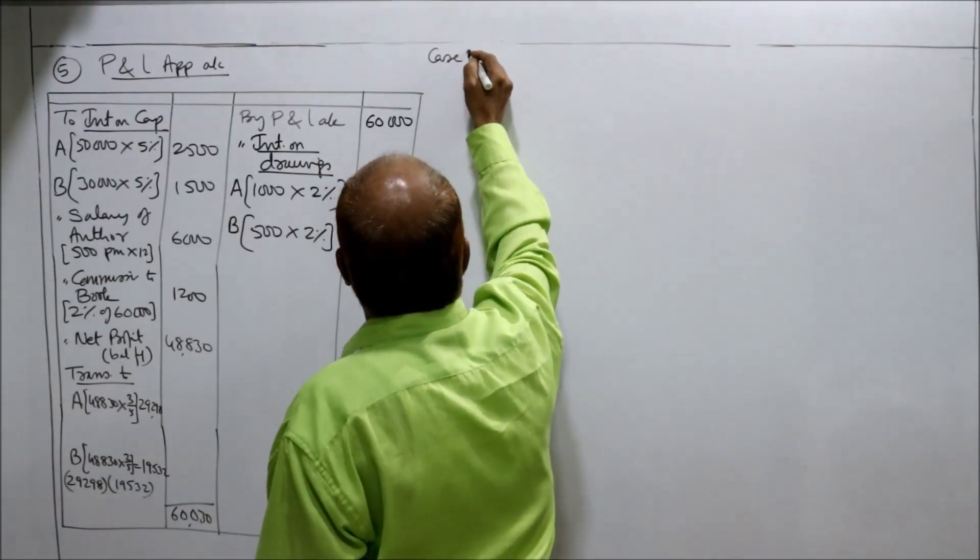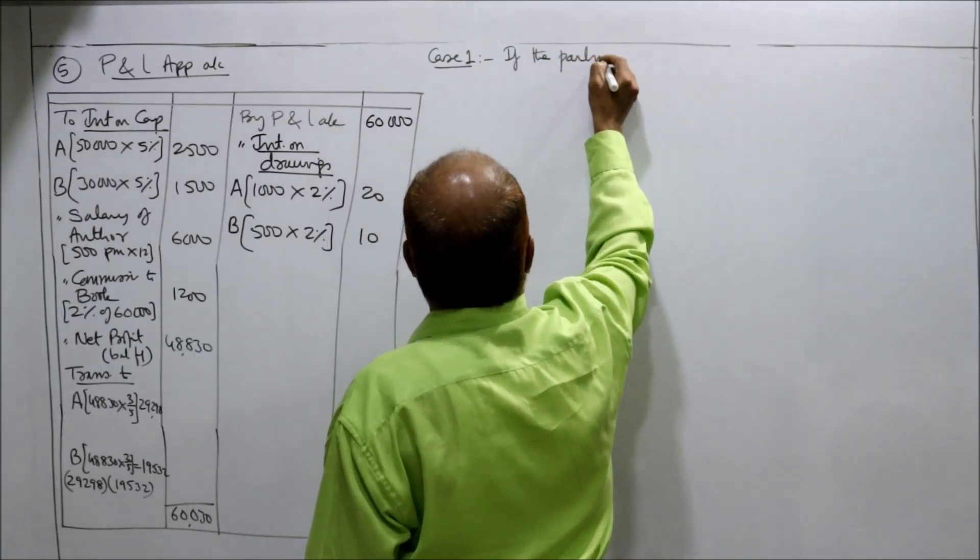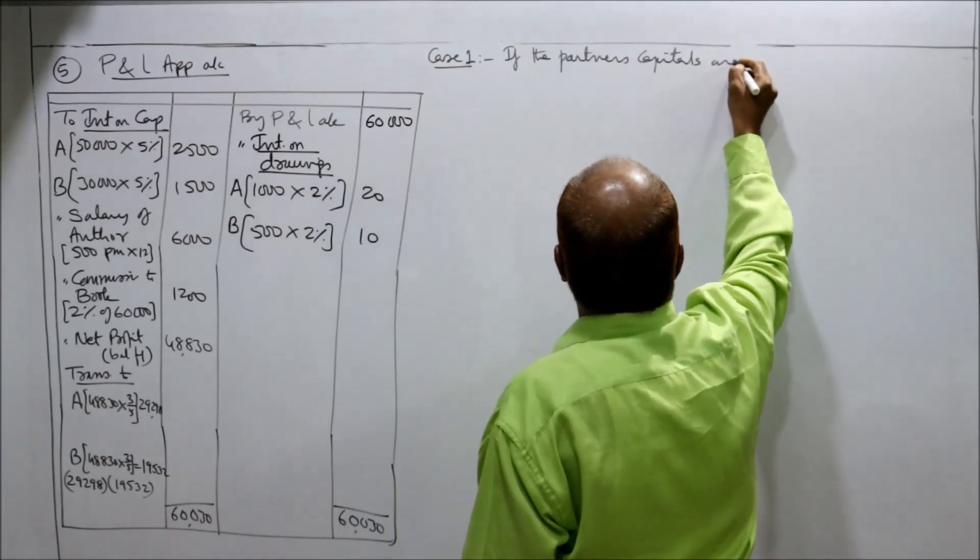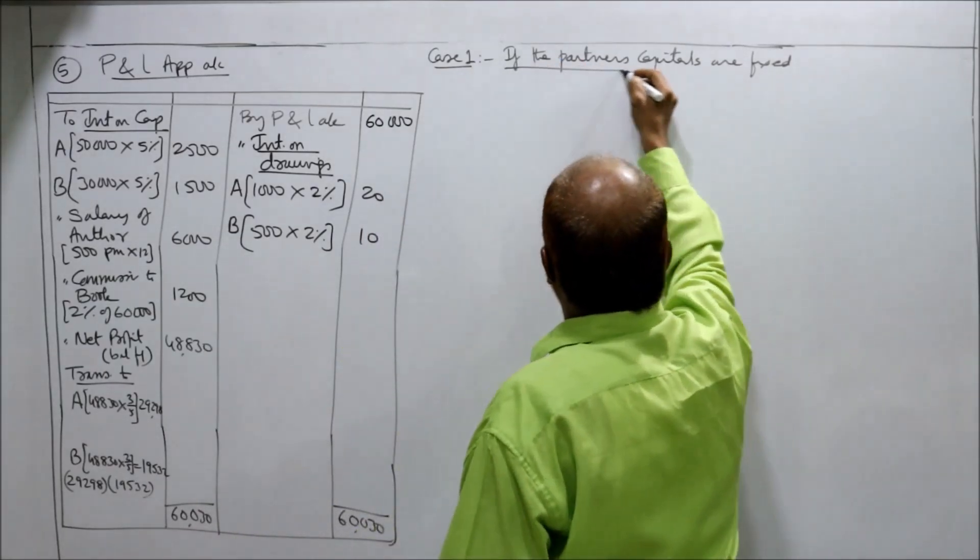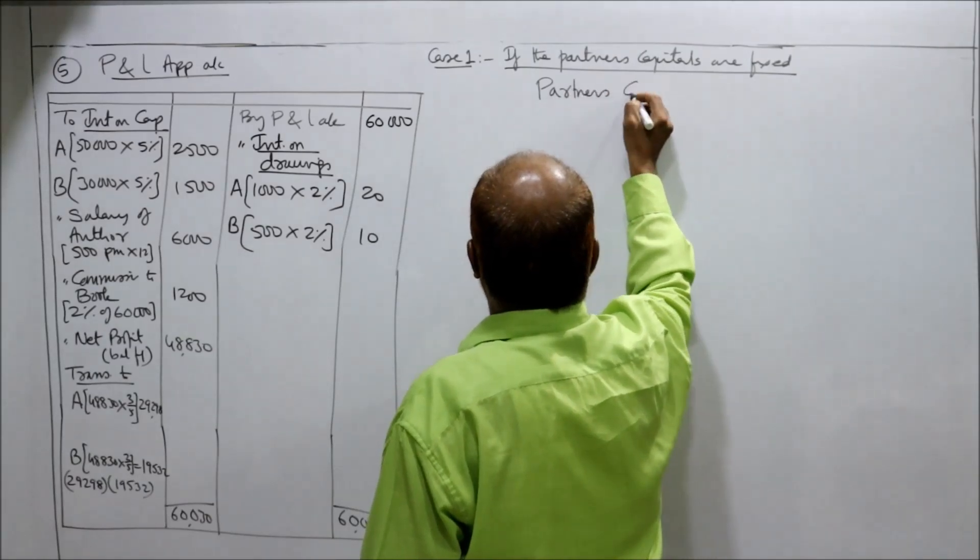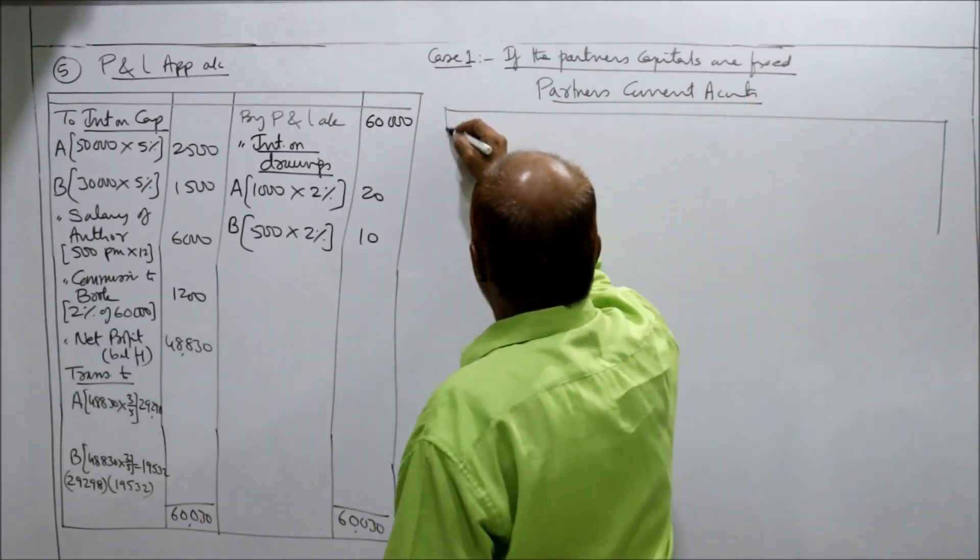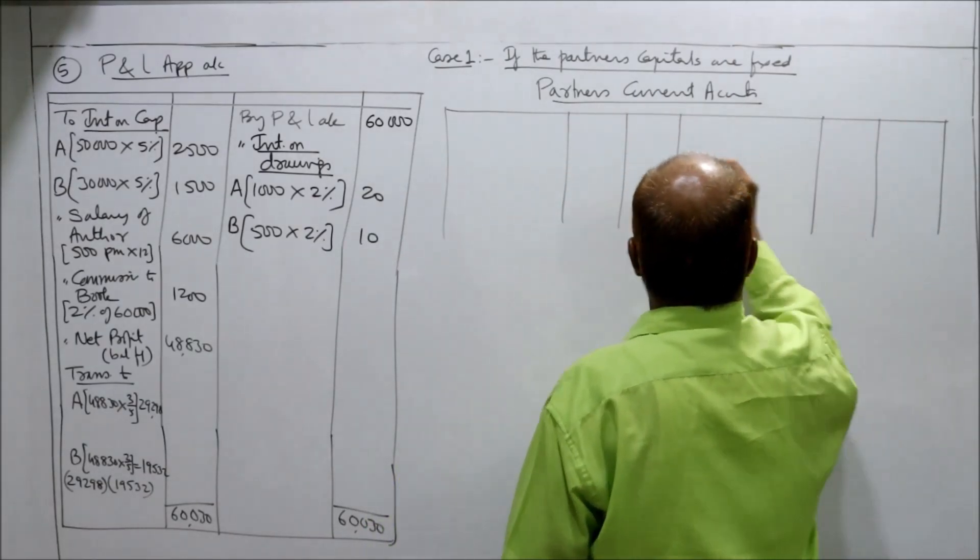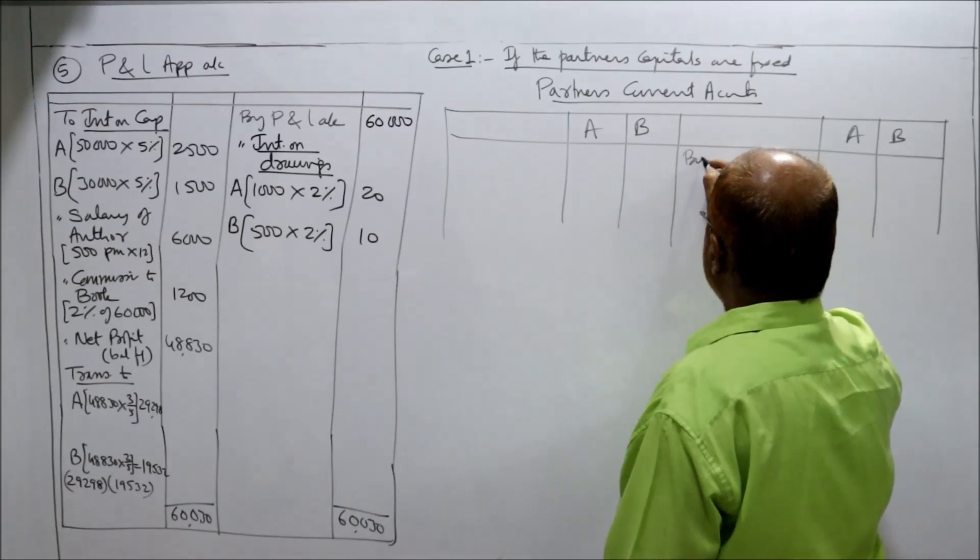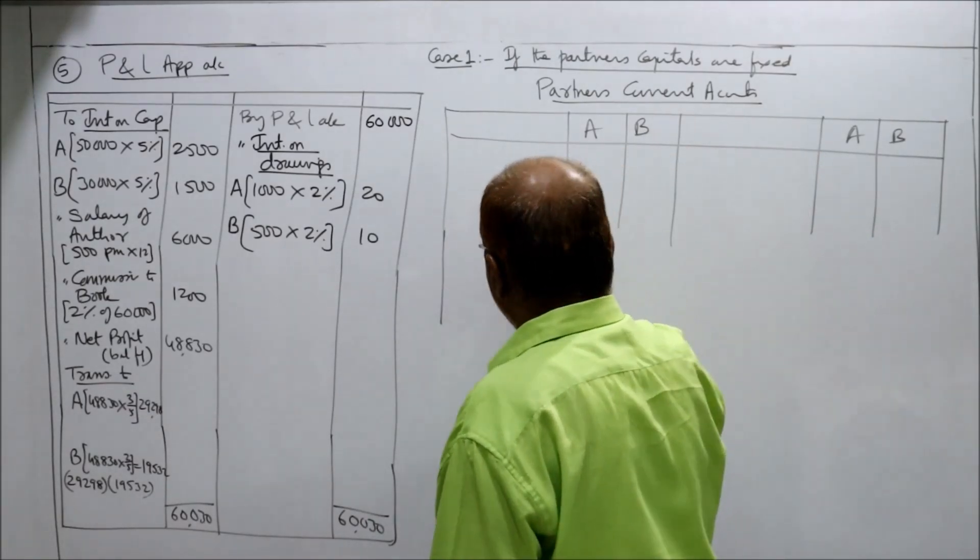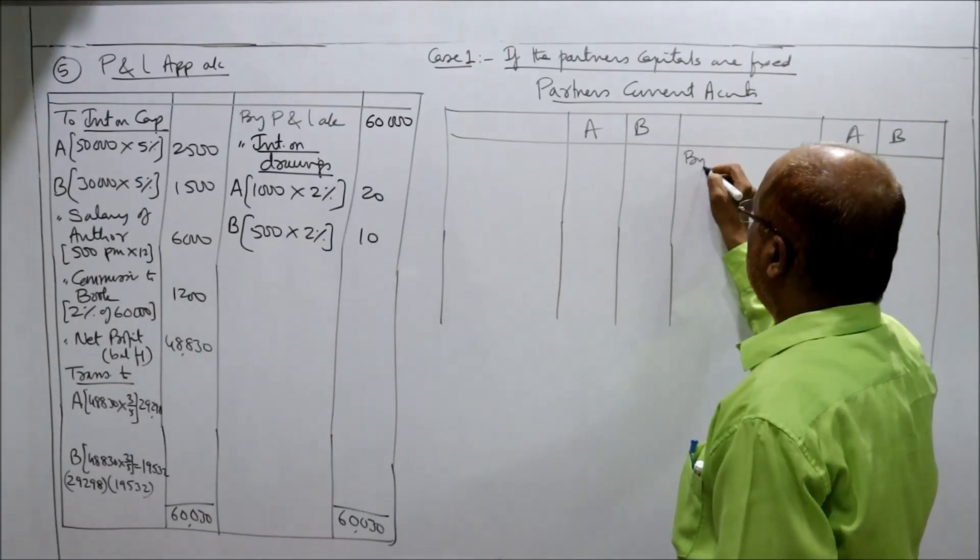Now case 1. If the partner's capitals are fixed. First case, then we have to make partner's current account. Author and book. By balance - not balance. We don't have any balance in the beginning of the year because we have started the business during the current year only. So directly we will take current account, all the balances.